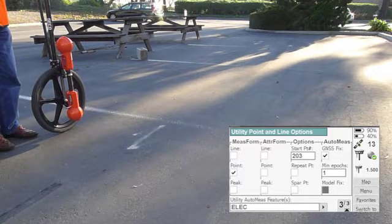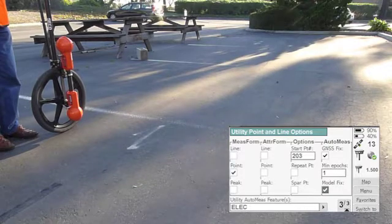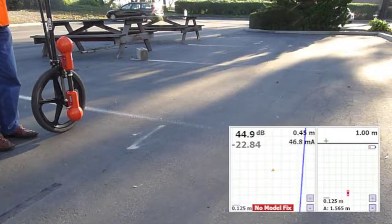First, turn on the ModelFix checkbox from page 3 of the line panel. Back on FieldSense, the screen will read No ModelFix.